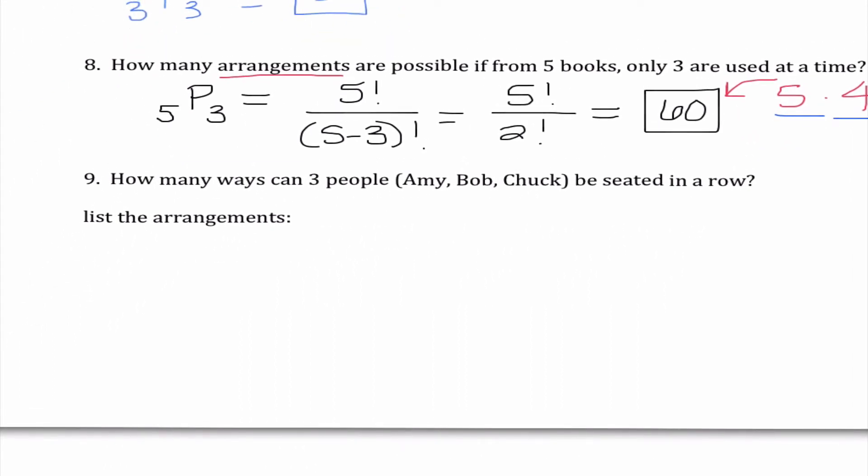Number nine says how many ways can three people Amy Bob and Chuck be seated in a row. Okay so here it doesn't say like a fancy word it actually says arrangements down here but if it didn't I know that if we're seating people the way that we could seat them Amy then Bob is different than Bob than Amy. Okay so we do need to pay attention to the order here. So we could do 3 factorial we could do 3P3 we could do 3 times 2 times 1 and all of them are going to tell us that there are six ways but it's asking me here to also list the arrangements.